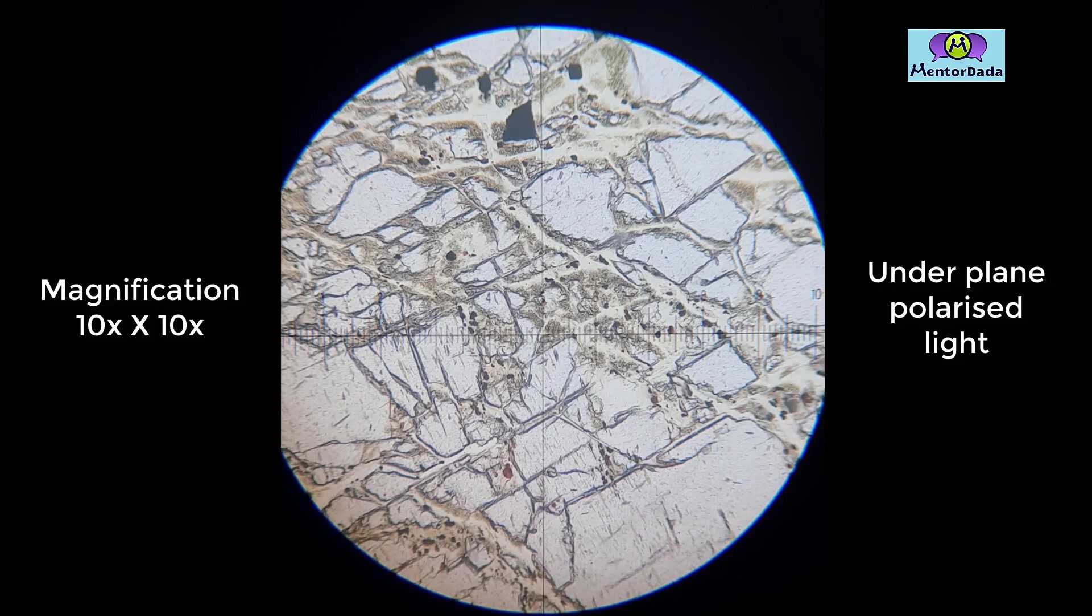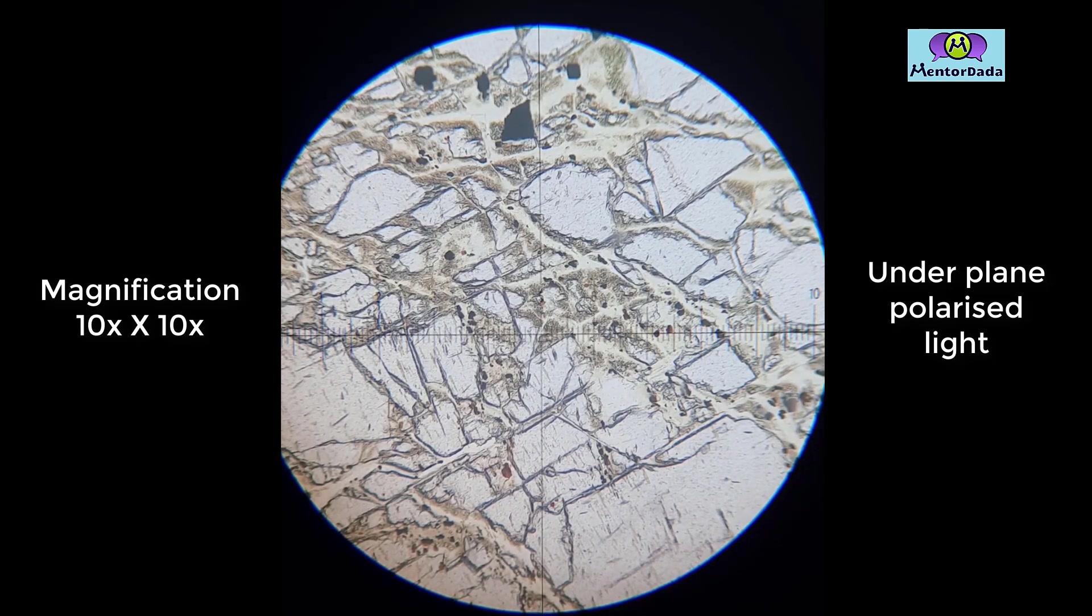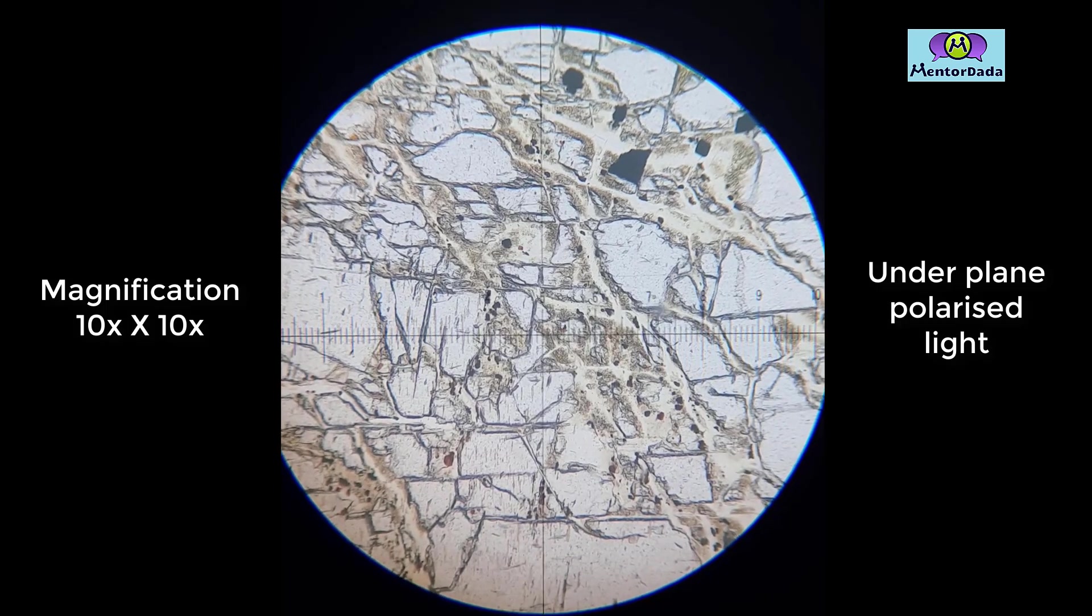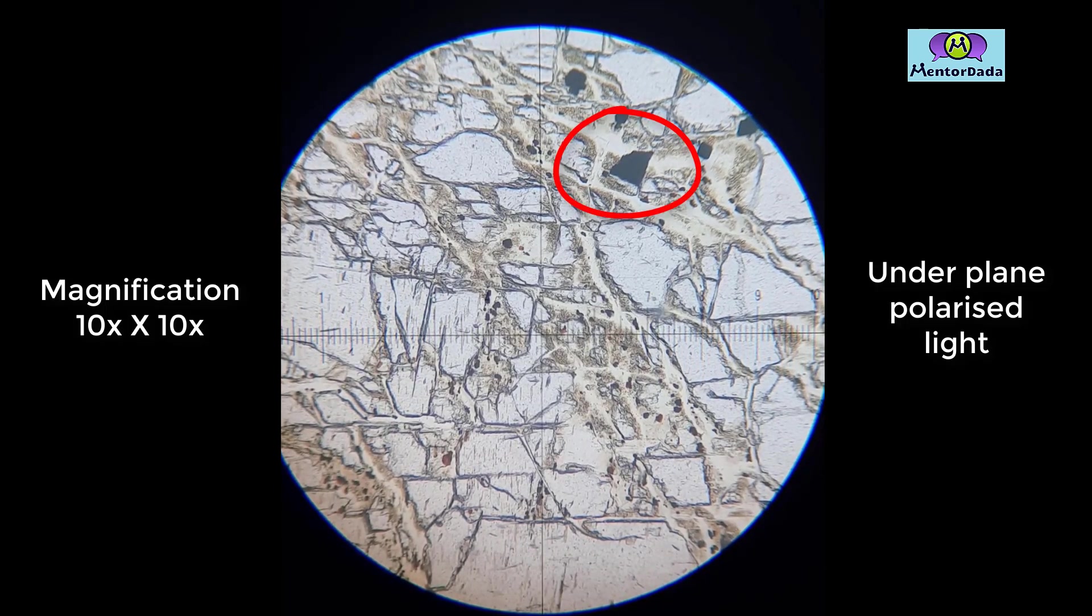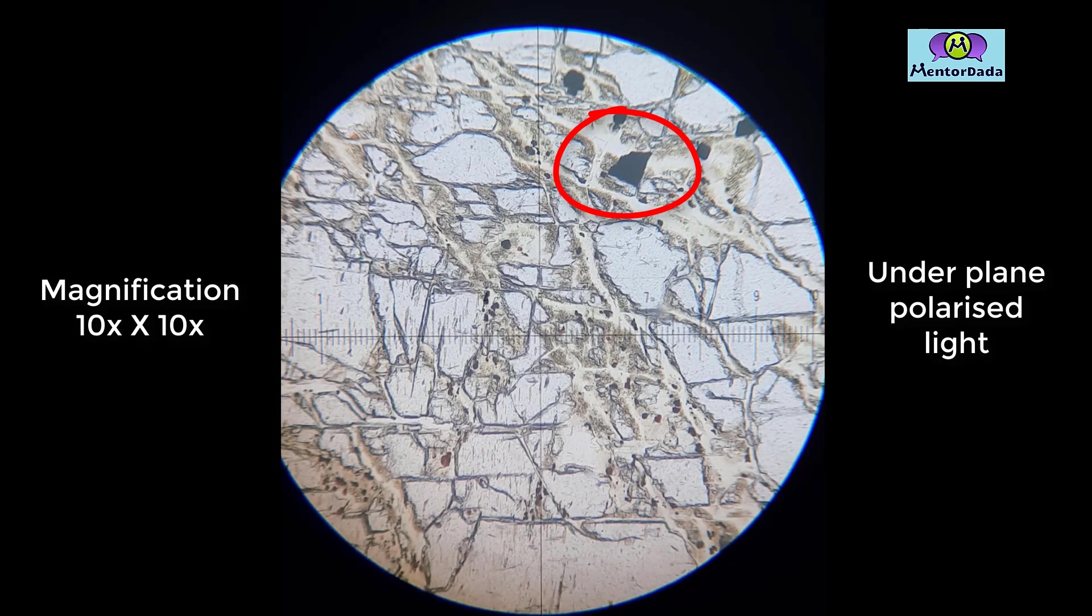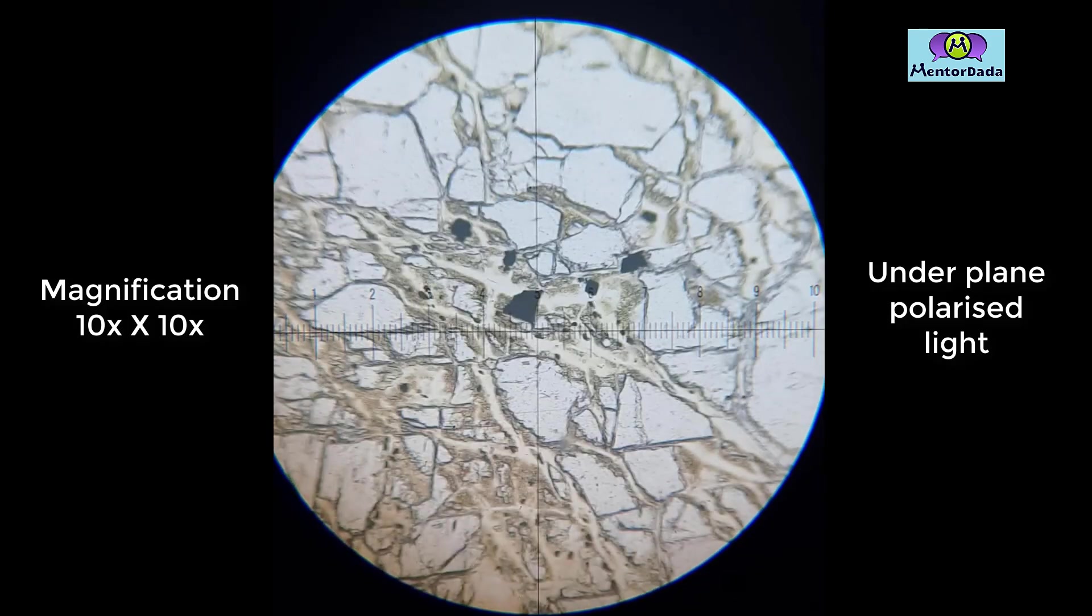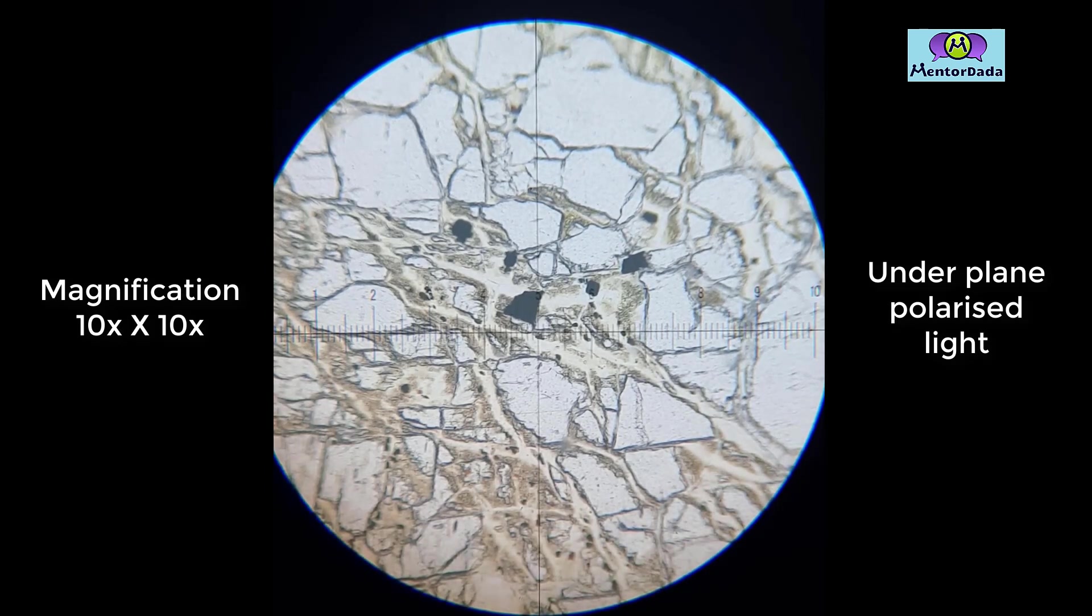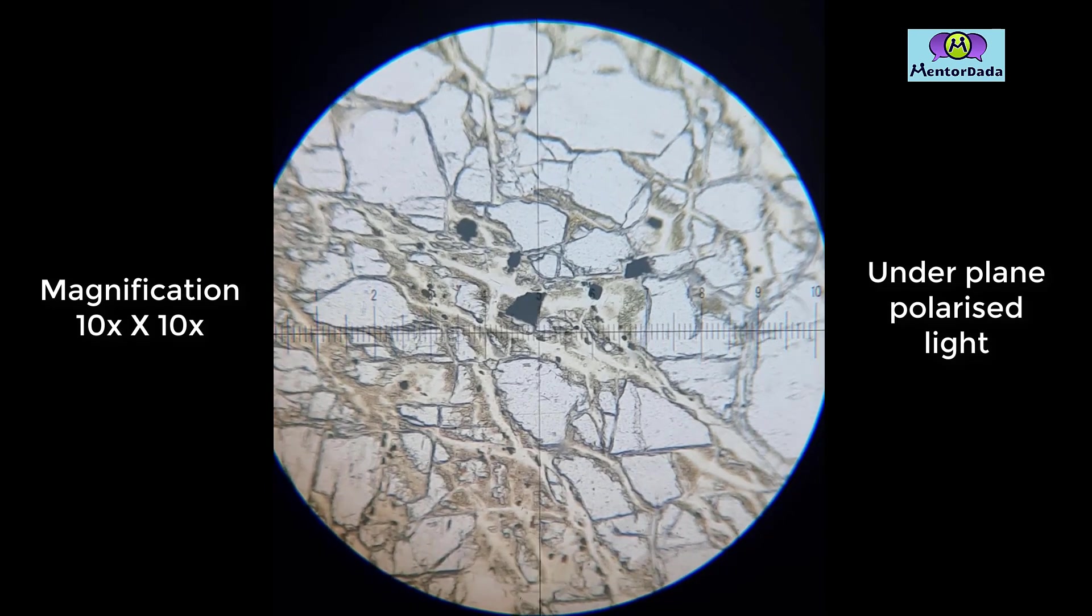Serpentine and magnetite are alteration products of olivine. Magnetite is an opaque mineral which is basically an ore mineral. The black opaque object is magnetite. We cannot identify magnetite properly under this reflected light microscope.